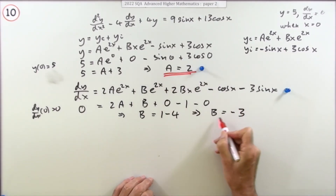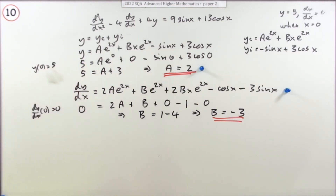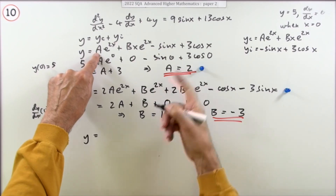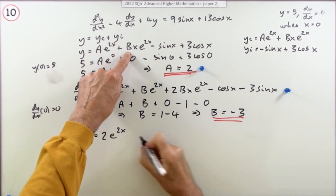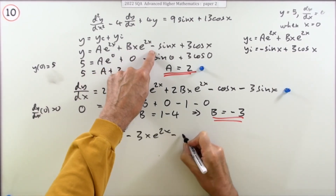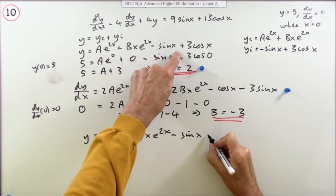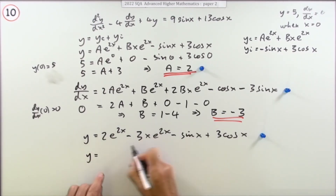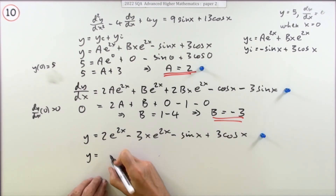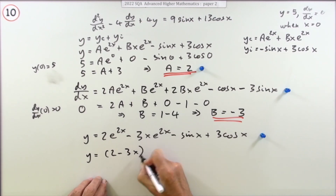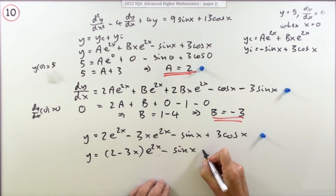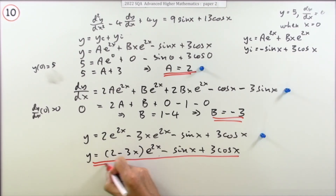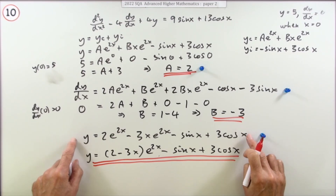Now feed A = 2 and B = −3 back into the general solution to get the final answer: y = 2e^(2x) − 3xe^(2x) − sin(x) + 3cos(x). This can be tidied up by factoring the exponential terms: y = (2 − 3x)e^(2x) − sin(x) + 3cos(x). Either form earns the final mark.